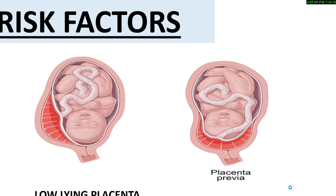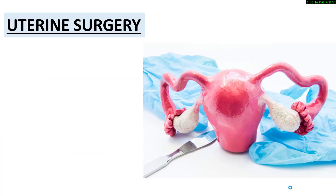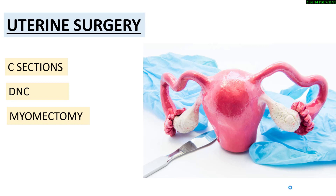So what are the risk factors for low-lying placenta or placenta previa? Number 1 is uterine surgery. Placenta previa is strongly associated with previous uterine surgery, like C-sections. The risk also increases in women with a previous history of D&C or myomectomy.